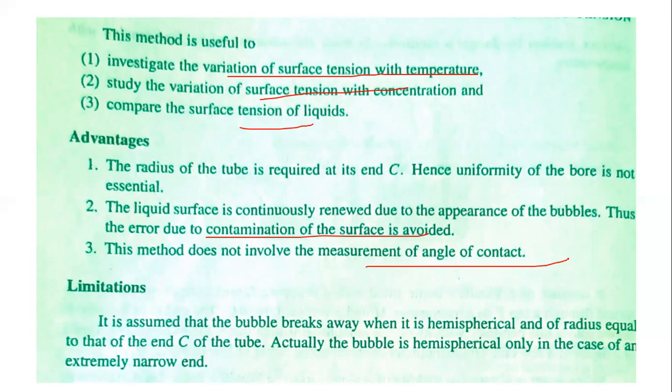Limitations: It is assumed that the bubble breaks away when it is hemispherical with radius equal to that of end C of the tube. Actually, the bubble is hemispherical only in the case of an extremely narrow end. So the radius of the tube plays a huge role in the accuracy of the result.